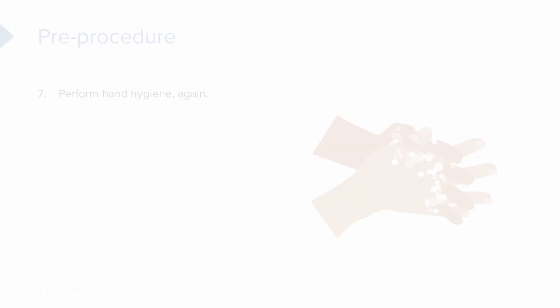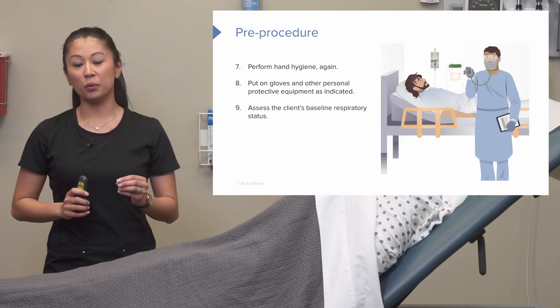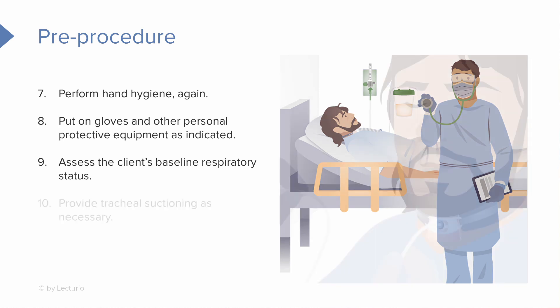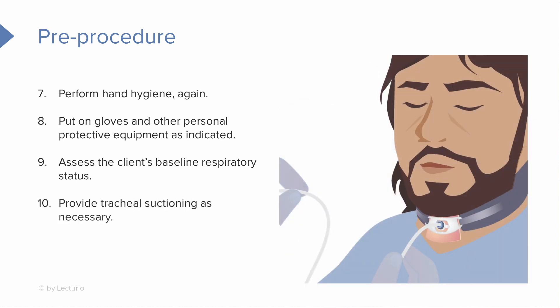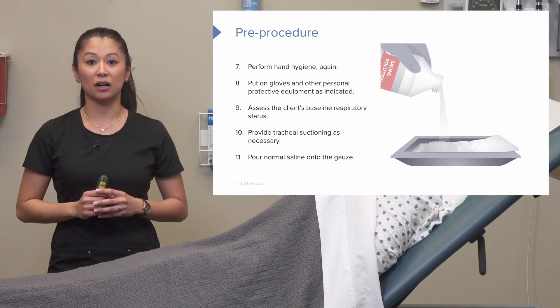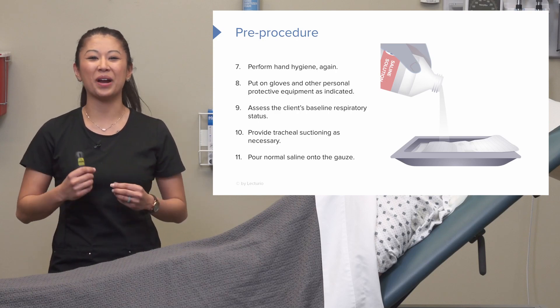Make sure your suction equipment is nearby and functioning properly. Perform hand hygiene again, put on gloves, and any other PPE that may be needed. An important step is to assess the patient's baseline respiratory status — we need to see if things are getting better or worse during our care. Provide suctioning as necessary if the patient has too much mucus or can't breathe appropriately. Then apply saline to the gauze and prep it to clean around the site.